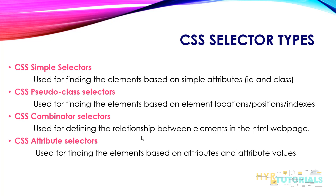Then come combinator selectors. As mentioned, if an element has no useful attributes, we have to take the help of another element to find out the current element. We build a relationship between the target element and the reference element. In those scenarios, we use combinator selectors. The last type is CSS attribute selectors.